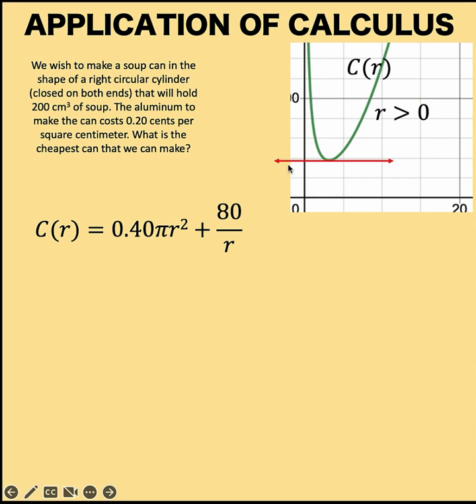In calculus, there is a way for us to know what is the slope of this red line, even if we do not know the equation of that line. Because the slope of the line tangent to the curve is the derivative of the equation of that curve, which is this cost function.